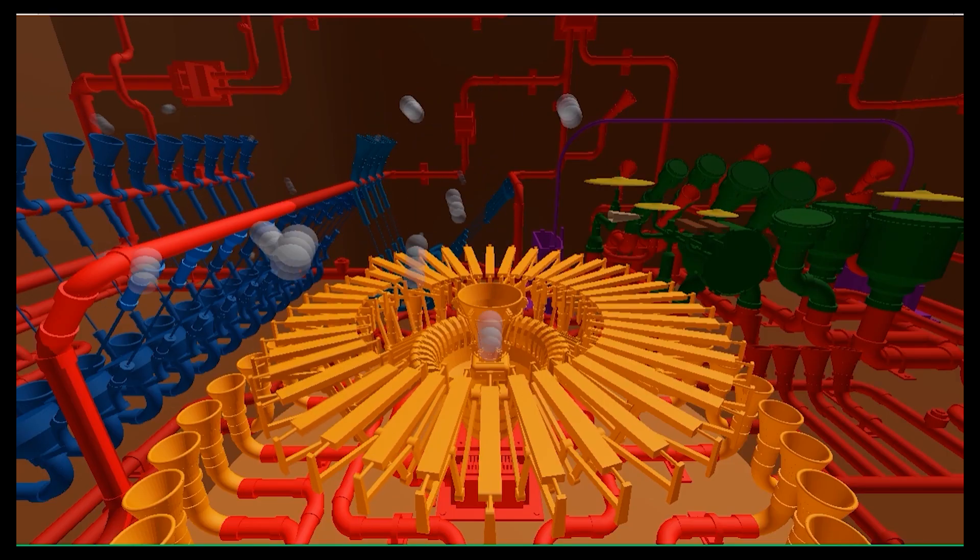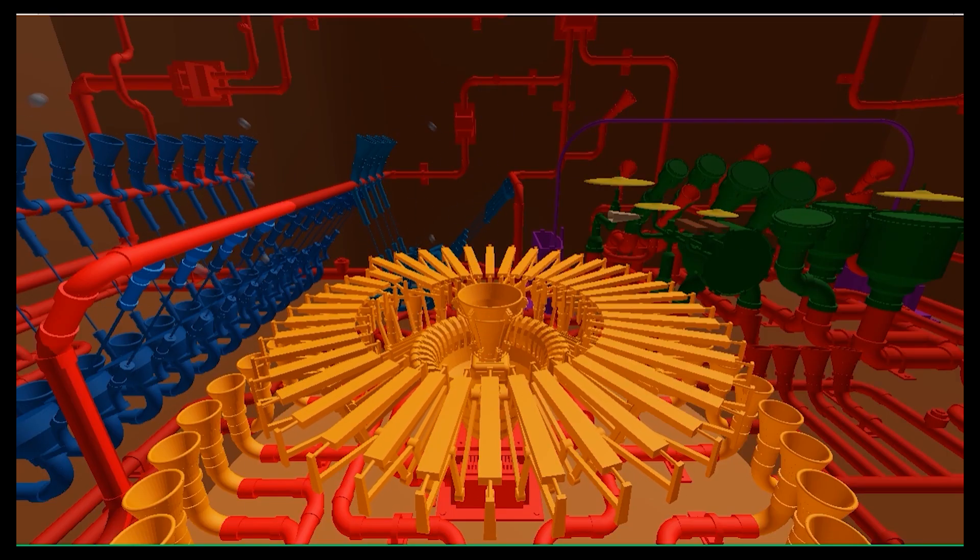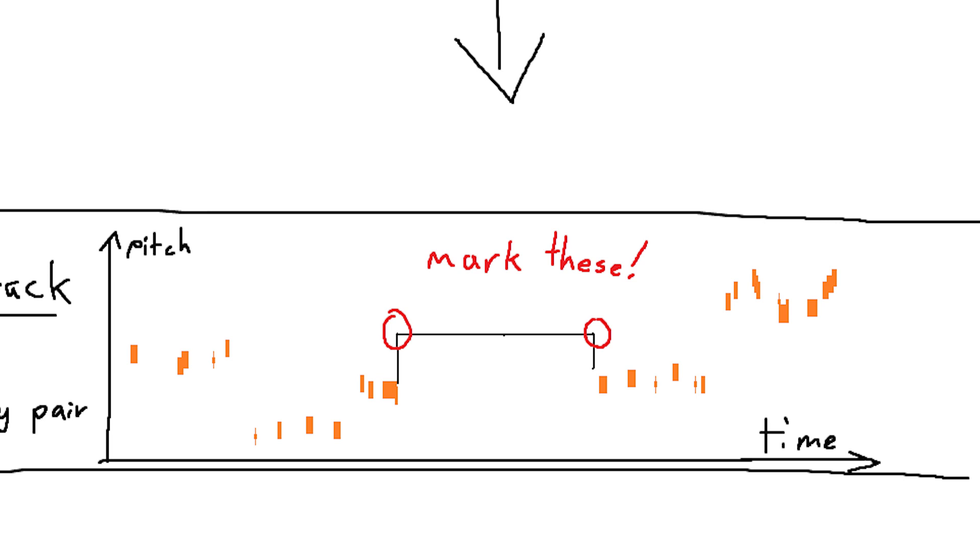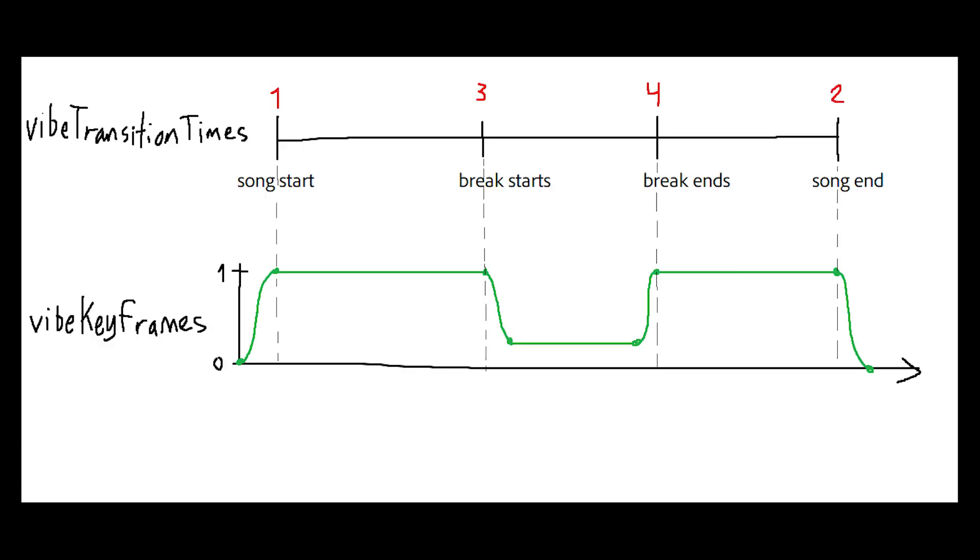This tells us that there's a period in the song where they don't play. And when I find those two points, I keep track of the start and the end times and I store them in the list.